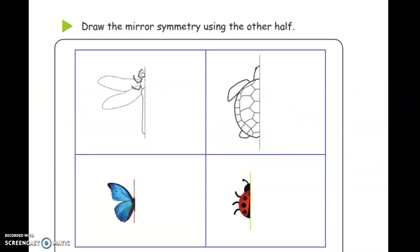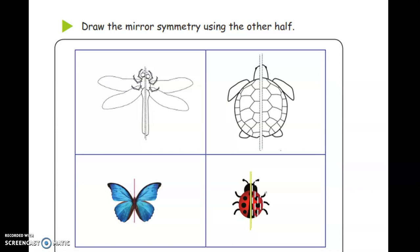Draw the mirror symmetry using the other half. Example, tortoise, butterfly and beetle.